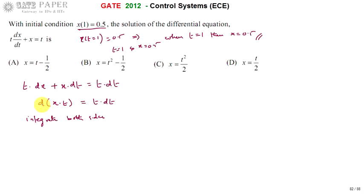When you integrate d(xt), differentiation and integration cancel. So it will be xt = ∫t dt. The integration of t is t²/2 plus some constant c. We need to calculate the c value. Then you will get the general equation, and from that you are going to obtain the x value.